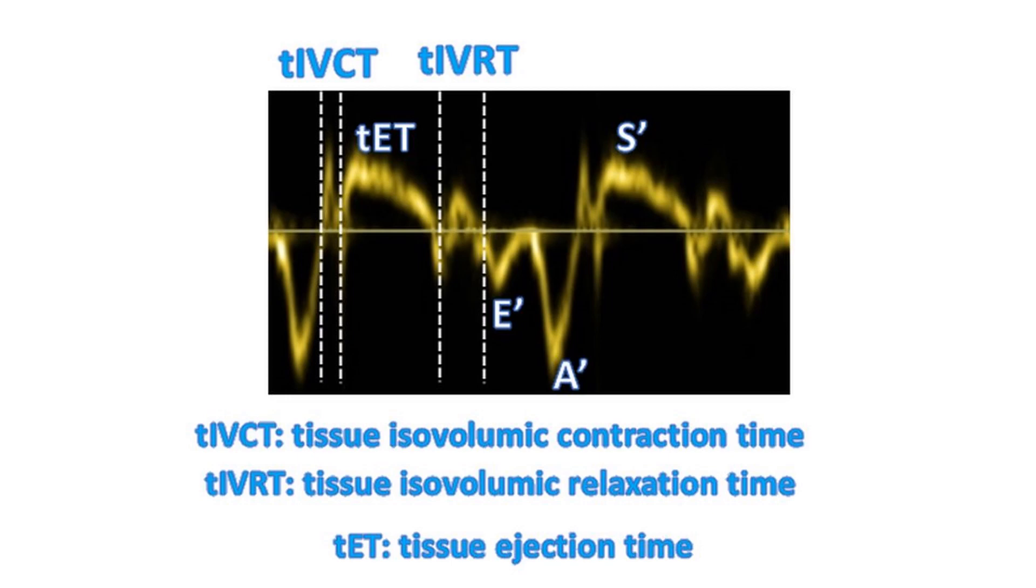Corresponding measurements on tissue Doppler are TIVCT (tissue isovolumic contraction time), TIVRT (tissue isovolumic relaxation time), and TET (tissue ejection time). Measurements are taken using pulsed tissue Doppler from the lateral tricuspid annulus.